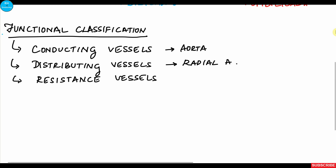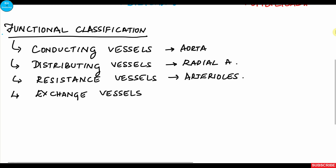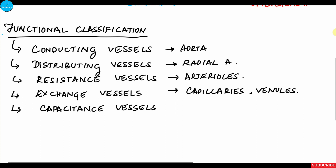Resistance vessels provide resistance to the flow of blood and determine blood pressure. Examples of resistance vessels are the arterioles. Next are exchange vessels, where exchange of nutritive substances, waste material, and gaseous substances occurs. Examples include the capillaries and venules.